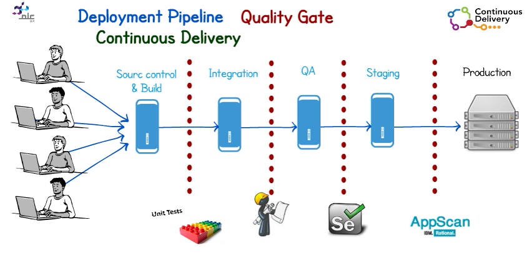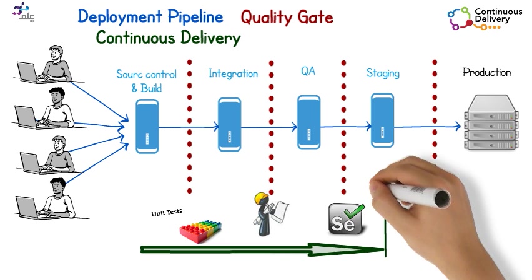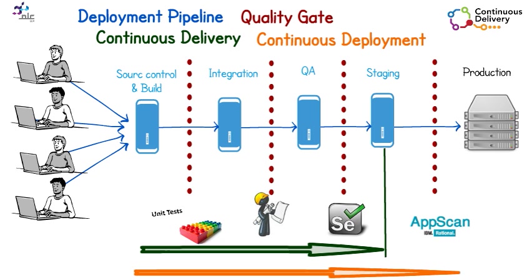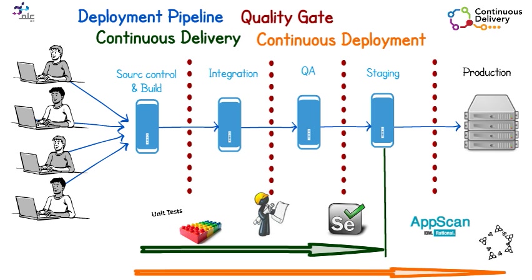Continuous delivery is the ability to deliver your code through your deployment pipeline all the way up to just one step before production. Continuous deployment goes that extra step and performs the deployment to production automatically.